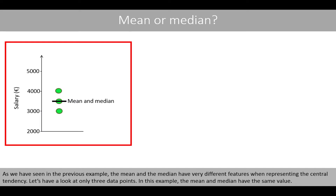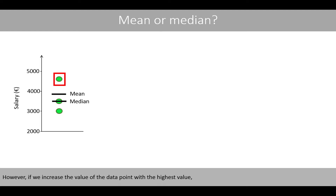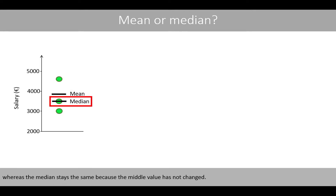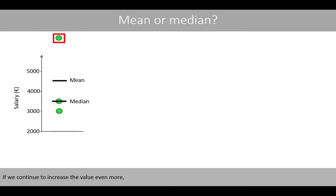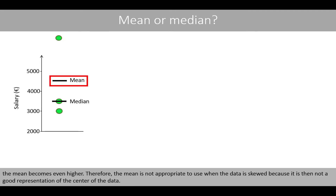As we have seen in the previous example, the mean and the median have very different features when representing the central tendency. Let's have a look at only three data points. In this example, the mean and median have the same value. If we increase the value of the data point with the highest value, the mean starts to move towards that value, whereas the median stays the same because the middle value has not changed. If we continue to increase the biggest value, the mean value continues to increase while the median stays the same. Therefore, the mean is not appropriate to use when the data is skewed because it is not a good representation of the center of the data.